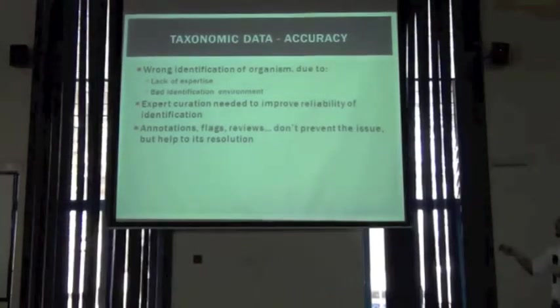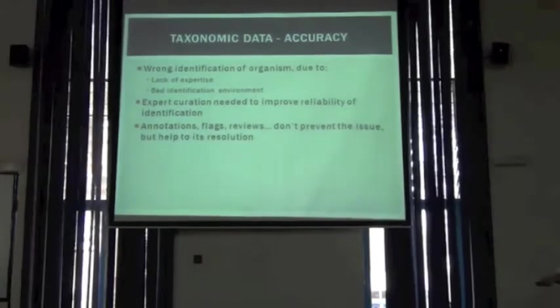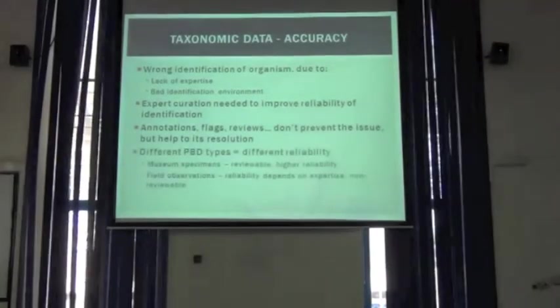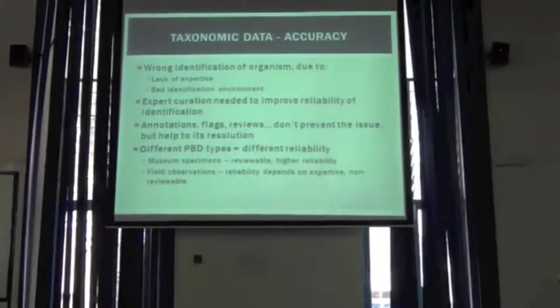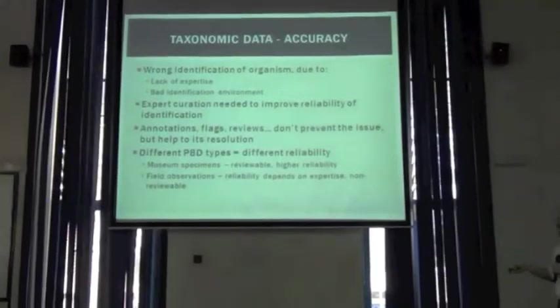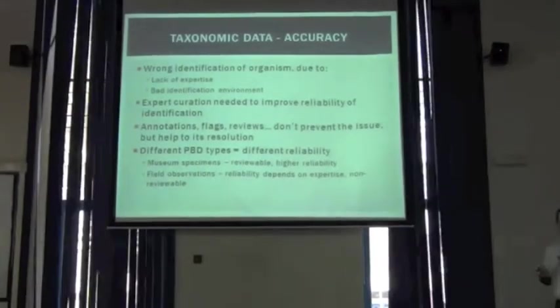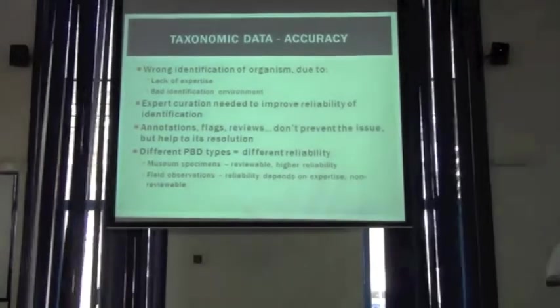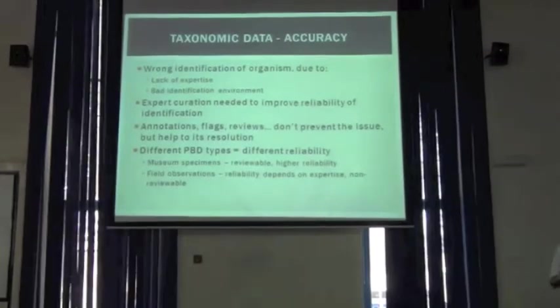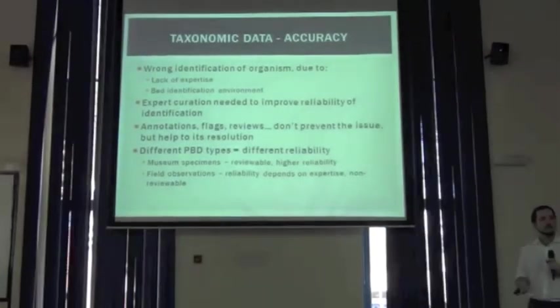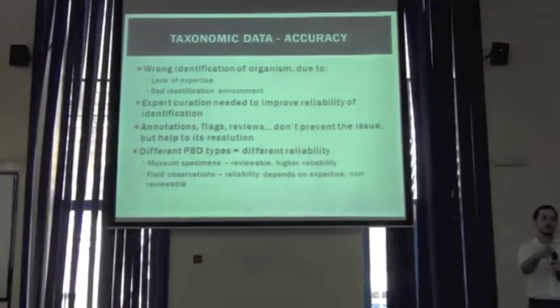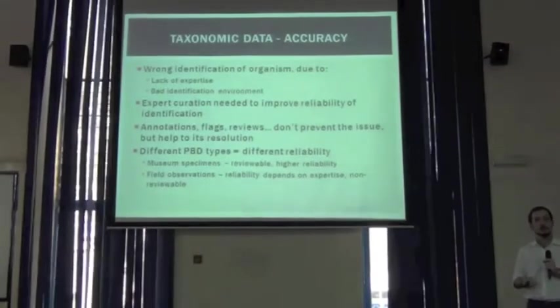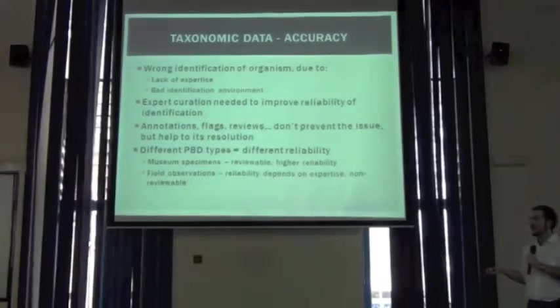What do I mean by identification environment? As I said before, there are several types of primary sources, several types of specimens, and each one has associated a different level of reliability. Museum specimens are preserved over time, so they can be reviewed. We have an identification of a specimen. We don't know if it's well done, so an expert comes, sees the organism, and says yes, this identification is right.